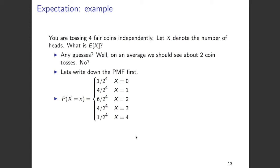Now using this PMF, we calculate the expectation of X. We get the expectation of X as 2 by using the formula: we multiply 0 with 1 by 2 to the power of 4, 1 with 4 by 2 to the power of 4, 2 with 6 by 2 to the power of 4, 3 with 4 by 2 to the power of 4, and 4 with 1 by 2 to the power of 4. If you do this, you'll get 32 in the numerator and 16 in the denominator, which gives you the result as 2.